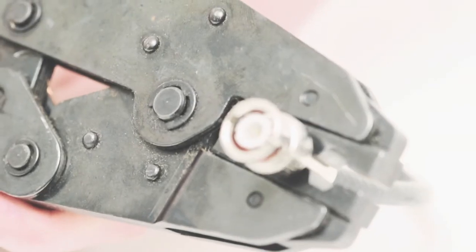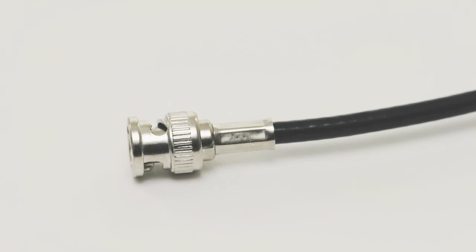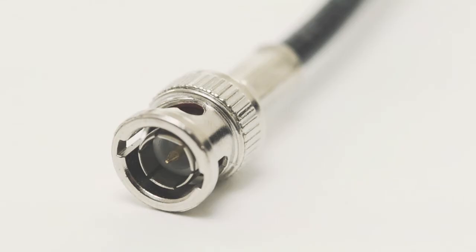With firm pressure, crimp the connector. This provides a secure and lasting connection. Give it a tug for testing and you have successfully crimped this BNC male connector.